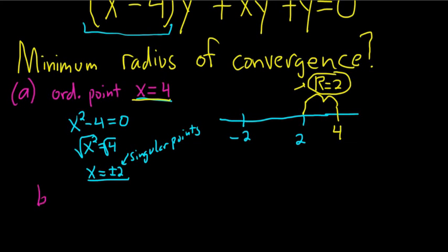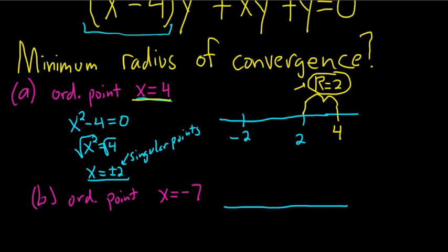Let's do another example. What if we say the ordinary point is x equals negative 7? Again, if you draw a picture, here are our singular points negative 2 and 2, and our ordinary point is way over here at negative 7. So r is the distance from the ordinary point to the closest singular point. In this case, r is equal to 5.